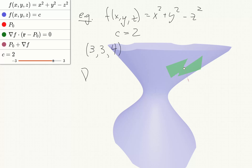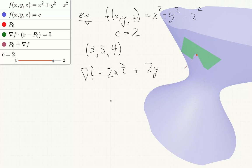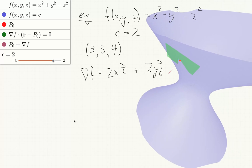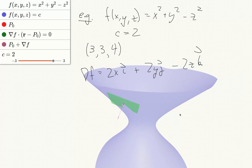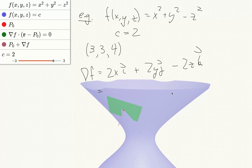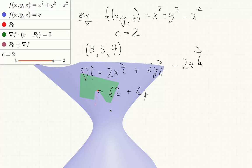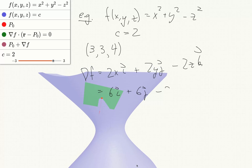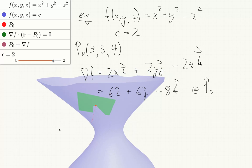So grad f at this point, well grad f in general is 2x i plus 2y j minus 2z k, so at p0 that'll be 6i plus 6j minus 8k at this point.